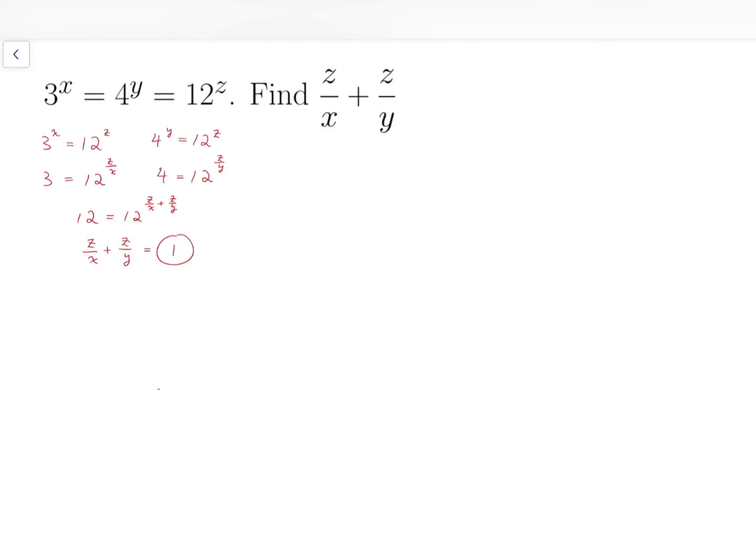Another approach is by noticing that the bases, 3 times 4, equals the third base, which is 12. So, I would like to combine the numbers with bases 3 and 4, see if I can get the power of 12. But the indices at the two numbers, x and y, are still different. So, I'm going to do some algebra to make the indices the same.